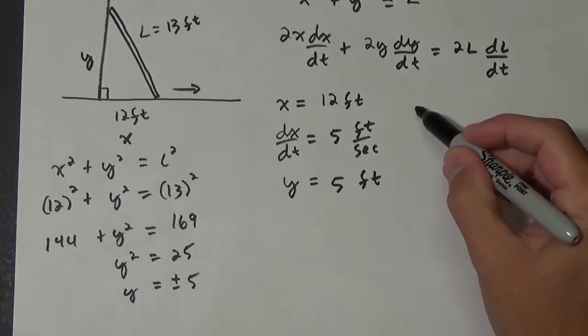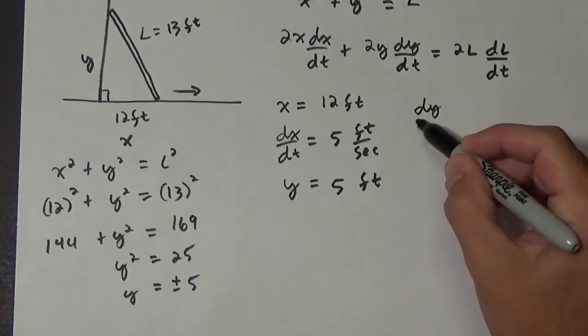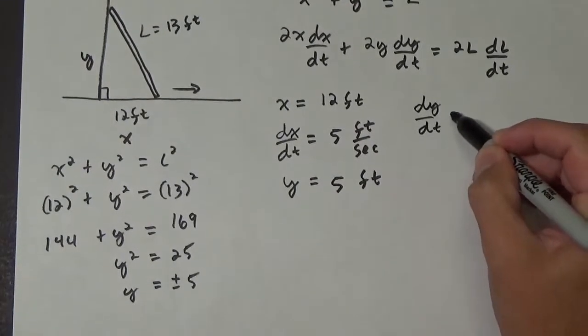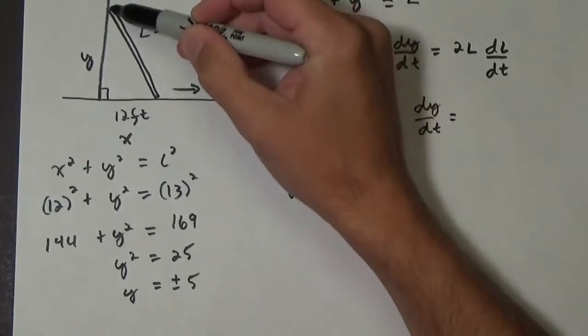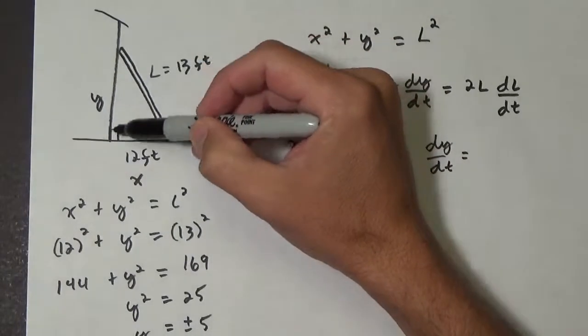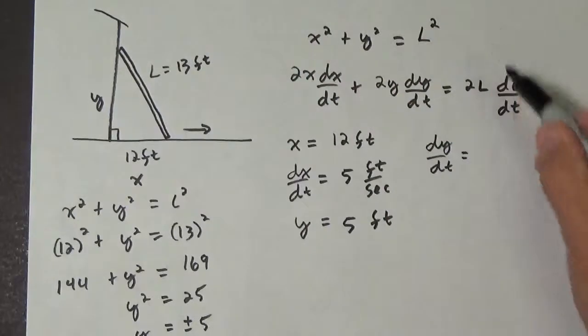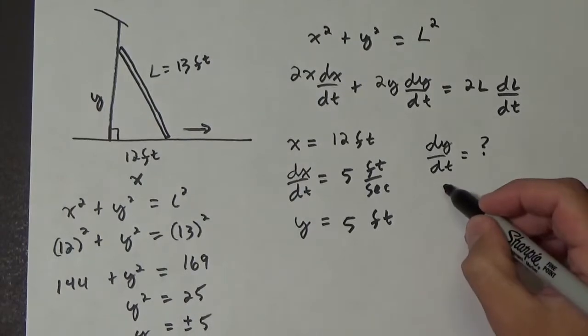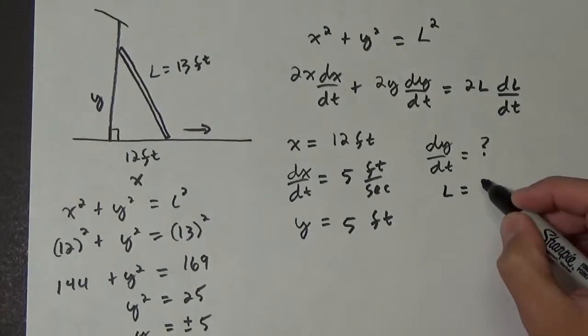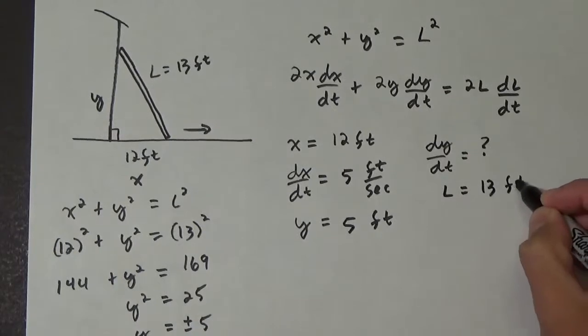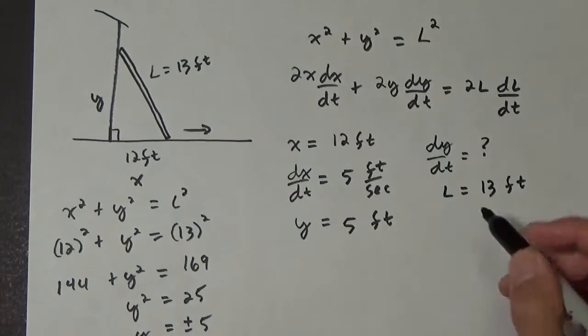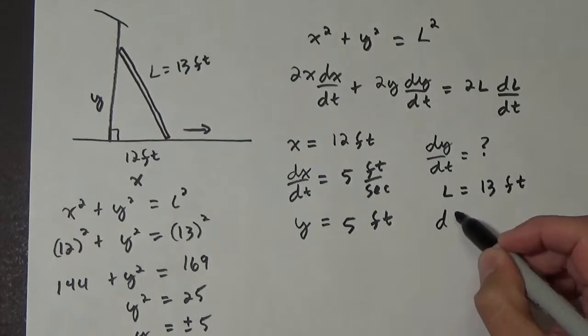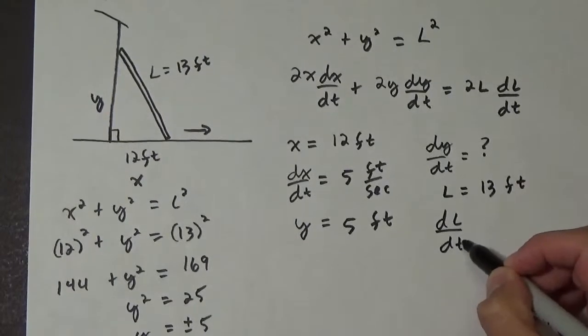Okay, so now let's look at dy/dt. What is dy/dt? That's the rate that the ladder is being pulled down. And that we don't know, so that's our question. What is L? L was 13 feet, we were given that. And then what is dL/dt?